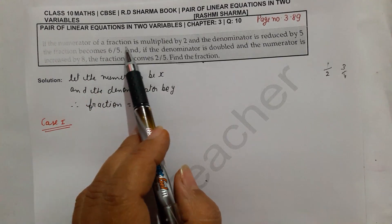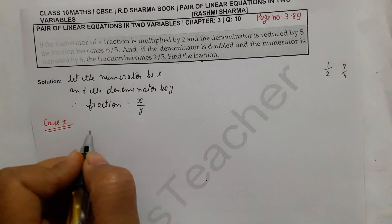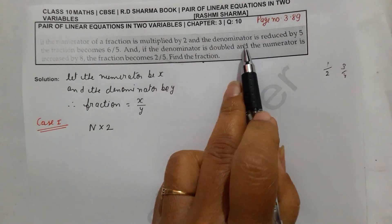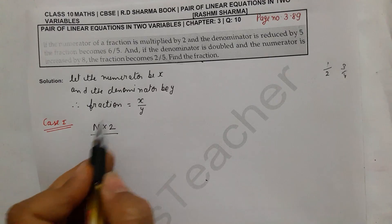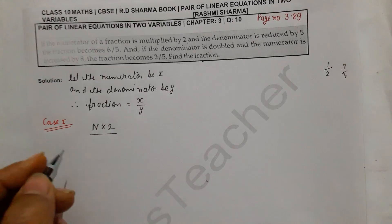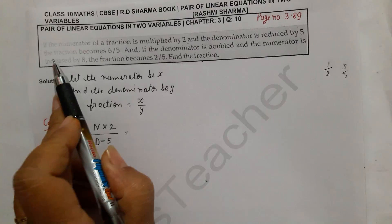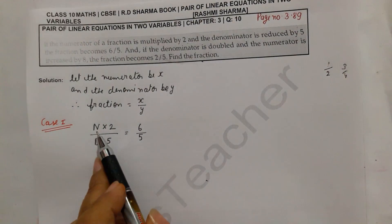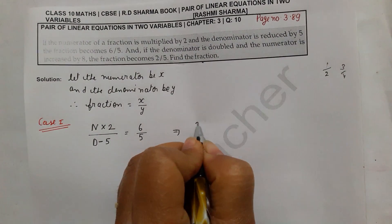Case one: if the numerator of the fraction is multiplied by two, and the denominator is reduced by five, the fraction becomes 6/5. So we write: 2x upon (y minus 5) equals 6 upon 5.